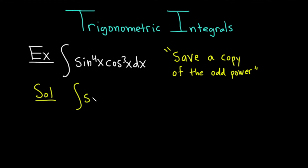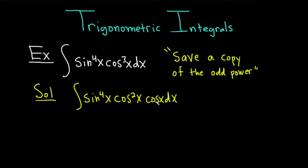Let's rewrite our integral. We have the integral of sine to the fourth of x, and then we're saving a copy of cosine, so I'll write cosine squared x here, and then over here we have cosine x dx. This cosine x dx is going to be our du, or at least part of our du.